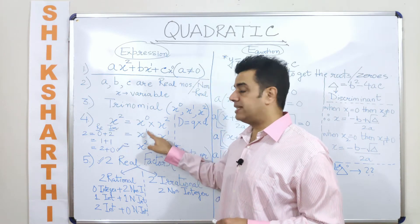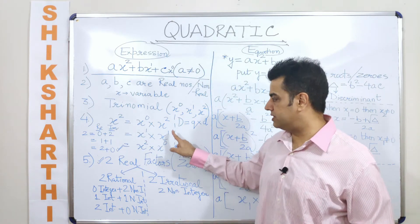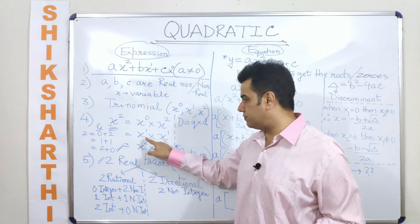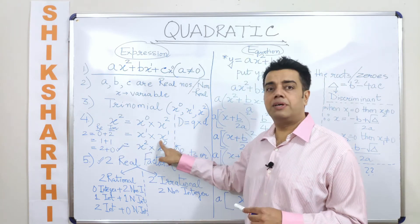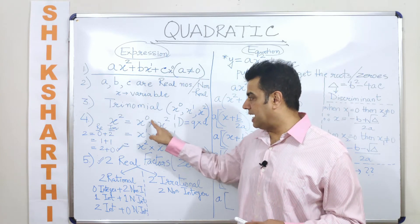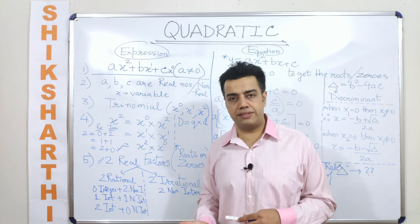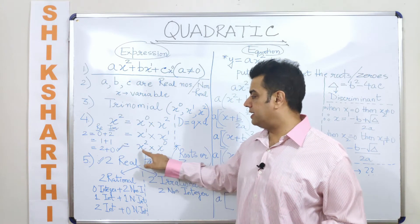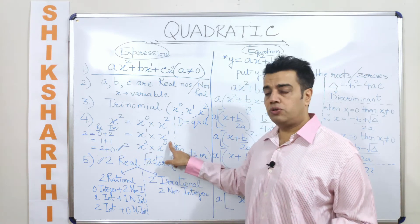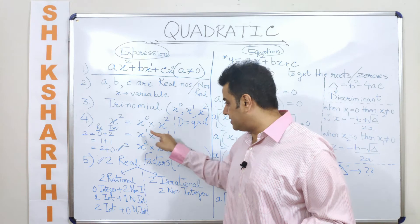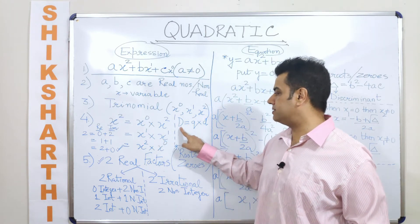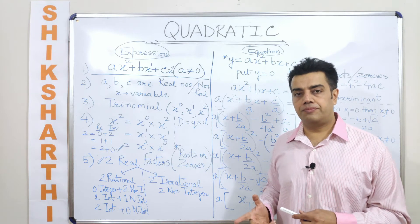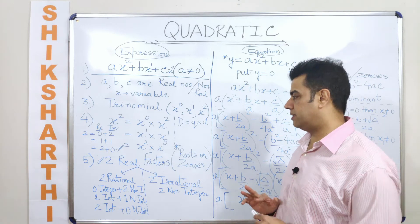This can also be written as x to the power 1 into x to the power 1, which is just like saying 1 plus 1. When the bases are the same, we simply add the exponents — this is the rule of indices we are using here. Similarly, I can write it as x squared into x to the power 0. Try and associate this discussion with: dividend equals quotient into divisor.